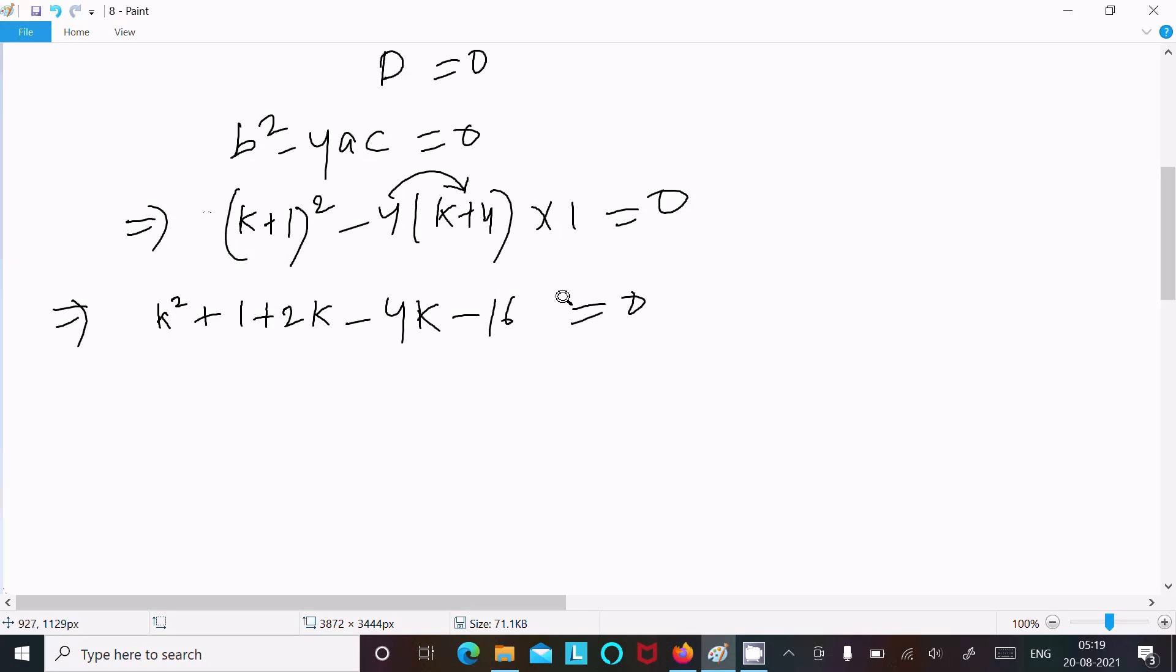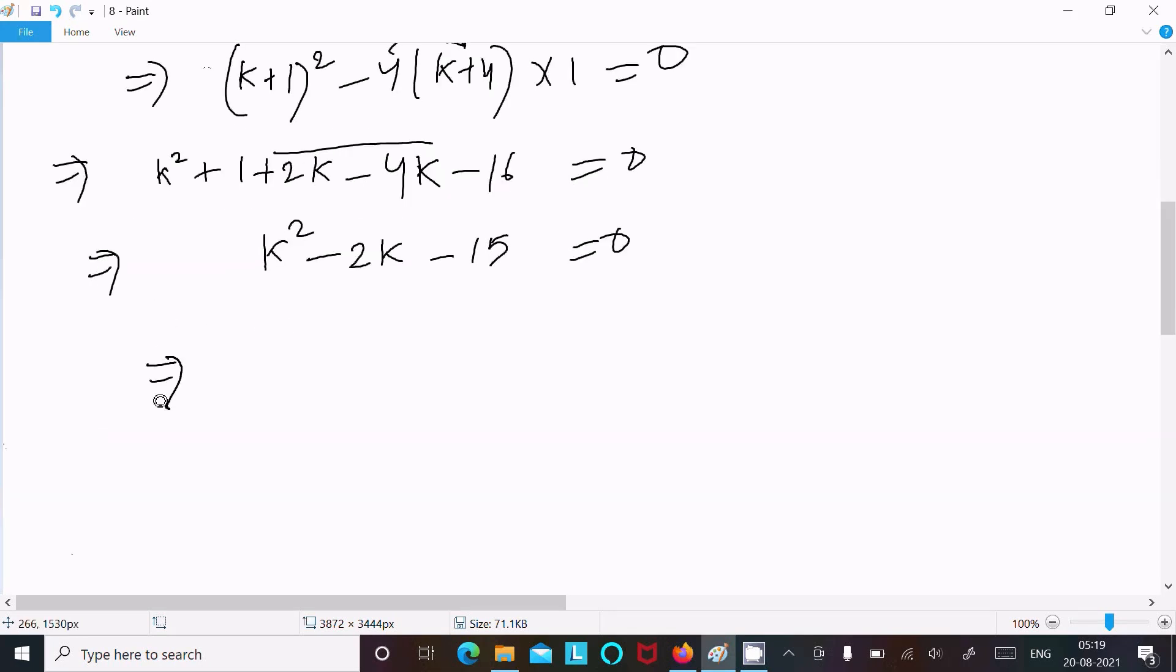After that, k² + 2k - 2k equals k² - 2k, and 1 - 16 equals -15. So we have k² - 2k - 15 = 0.